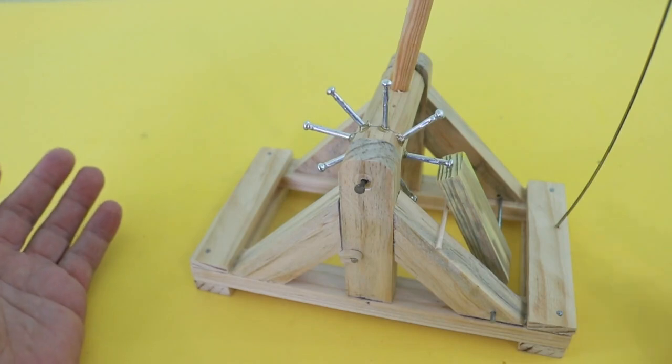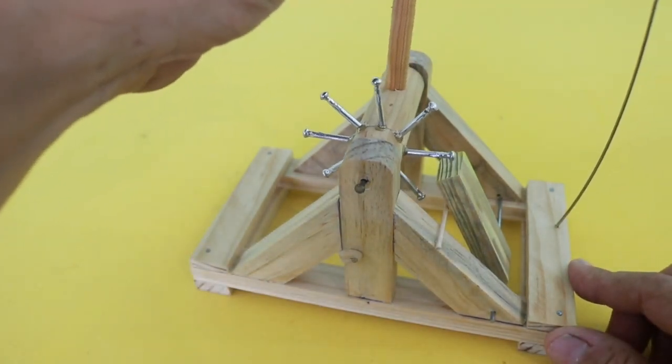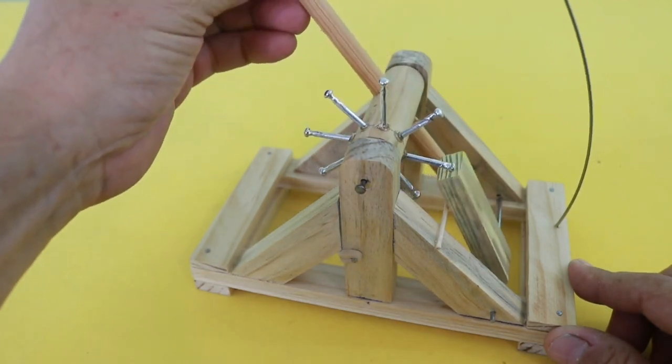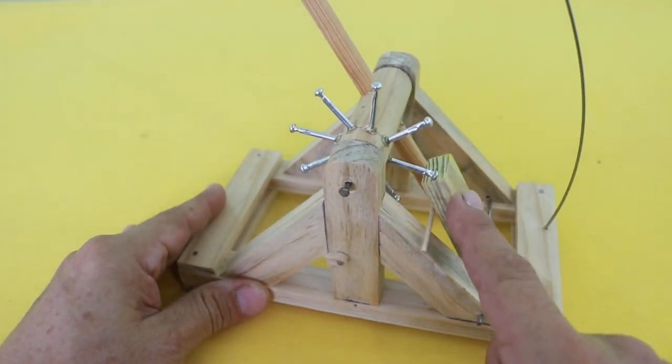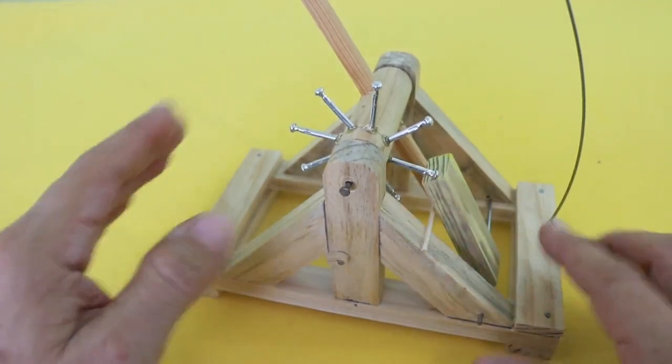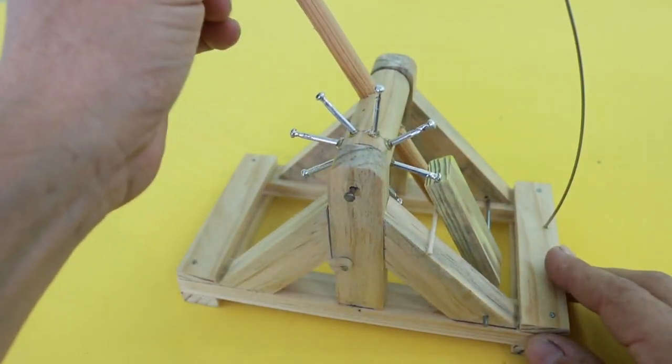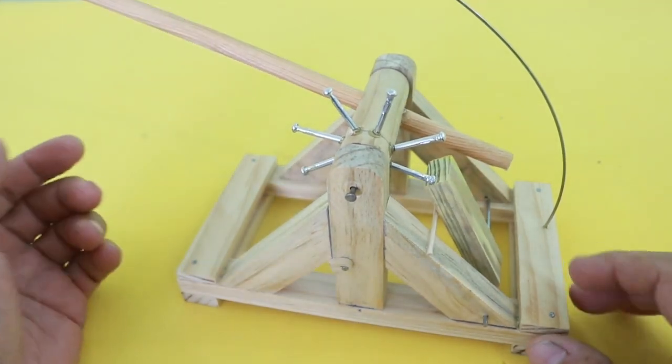This is a ratchet and pawl mechanism. When you move the lever to the left, you can see how the pawl prevents the lever from moving to the right. You continue to rotate, and then it stops again.